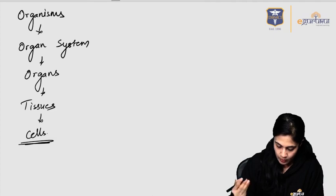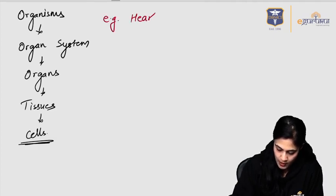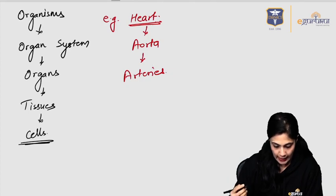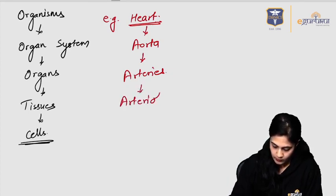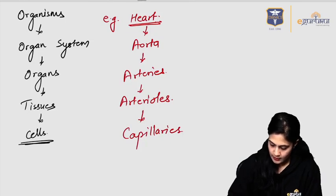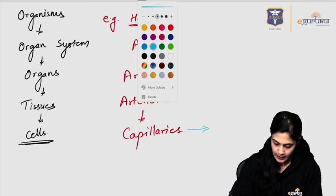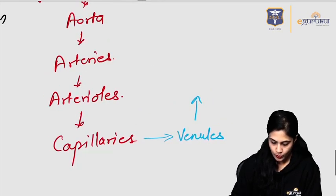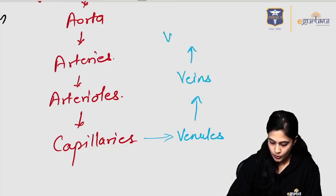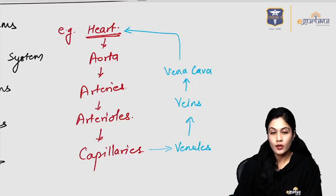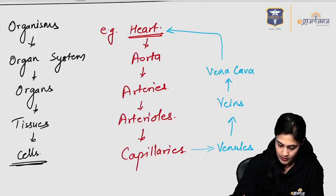For example, taking the circulatory system — the heart gives rise to the aorta, which divides into arteries, then arterioles, and then capillaries where exchange takes place. The capillaries drain into the venules, then the venules drain into the veins, and veins drain into the vena cava — inferior and superior — which then drains back into the heart.